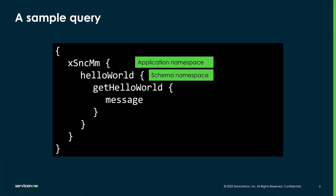Inside the schema namespace, we have one or more query names. I like to think of these as functions that the API can perform — in this case, we'd like to run the get hello world function. Often these are named so you can easily tell what they do, like update customer, increment discount, or get all clients. Finally, we get to the properties we want. In this case, we want the message property from the schema. By looking at this query, we can see it requested the value of message — there could be more, but that's all we want right now.